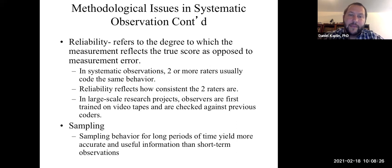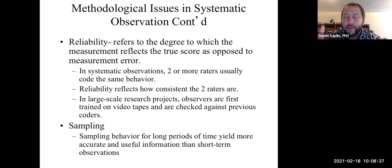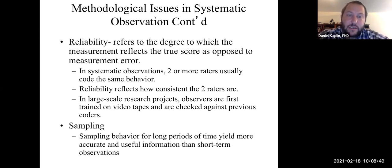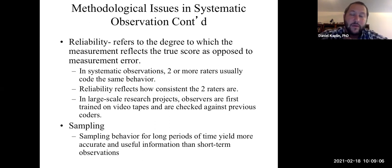When we talk about reliability, that's the consistency of the score — whether it reflects the true outcome or some kind of error. Reliability is always a combination of true score plus error. In systematic observation, usually you have two or more people observing the same thing, coding the same behavior, and the more consistent the codes are, the better the inter-rater reliability rating.